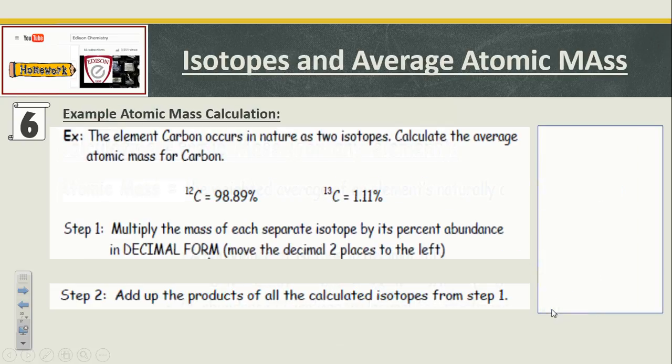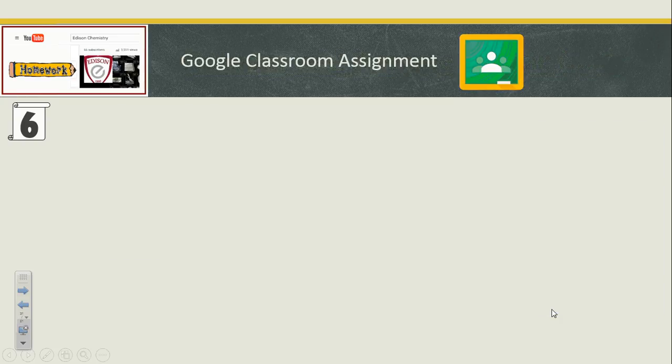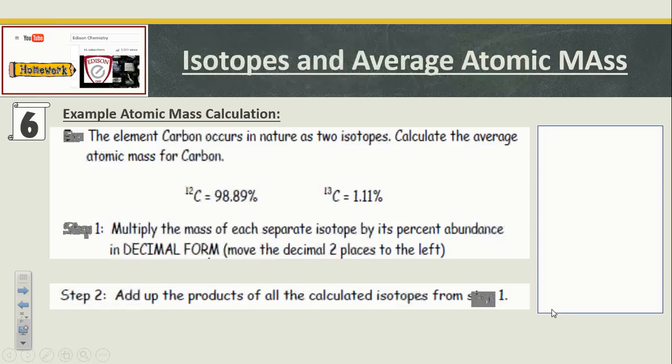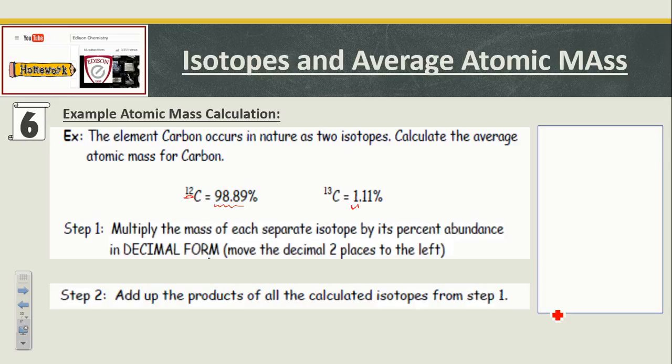Here's an example. The element carbon occurs in nature as two isotopes. Calculate the average atomic mass for carbon. For carbon-12, 98.89% of all the carbon atoms out there are carbon-12. And 1.11% of all the carbon atoms out there are carbon-13.